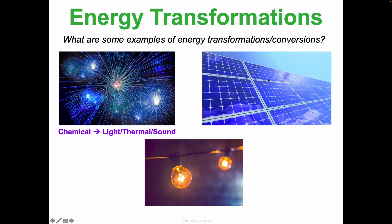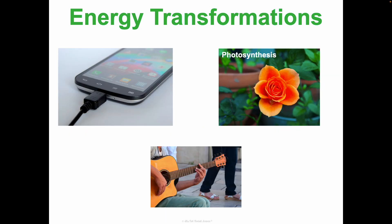Think about a solar panel — at its most basic, it takes in solar or light energy from the sun and converts it to electrical energy that can power our devices. For example, outdoor security cameras can be solar powered with little panels on top; they take that in and keep running. A light bulb goes the opposite direction, taking electrical energy from a wire and converting it into light. A phone takes electrical energy and converts it into light, sound, and electromagnetic energy for Wi-Fi and similar functions.